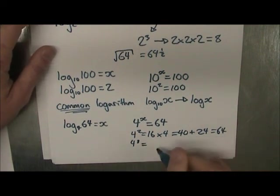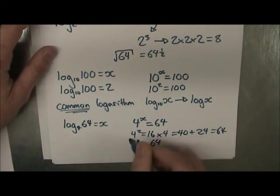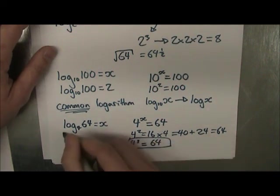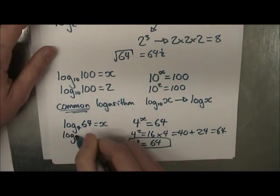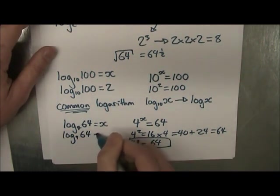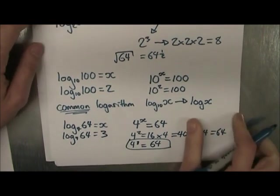Oh my goodness, 4 to the power of 3 is equal to 64. And that's exactly what you're looking for. So you know that log base 4 of 64 is equal to 3. Alright?